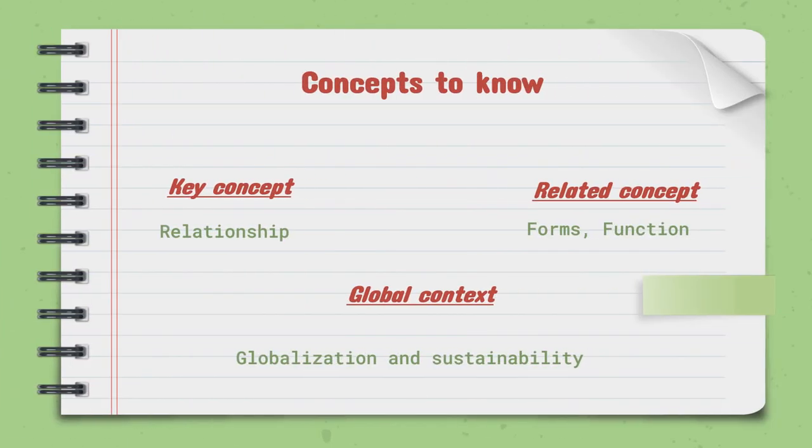For the concepts you are supposed to know, we are going to start with the key concept, which is Relationship. Since we are talking about Living Things and how they live in the Biosphere — and the Biosphere means the Earth — we are going to see how all the different living things come together and fit together on Earth. The related concept is Forms and Function. There are different forms of living things, and all living things have different functions. For the global context, we have Globalization and Sustainability, talking about how we as living things help the globe through eco-friendly foundations for markets and commercialization of global sustainability.